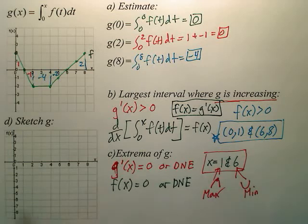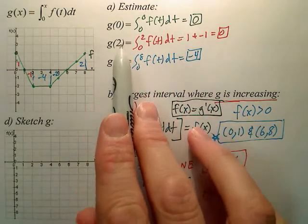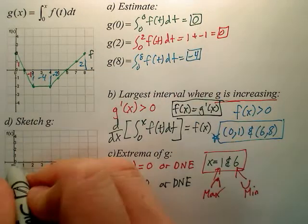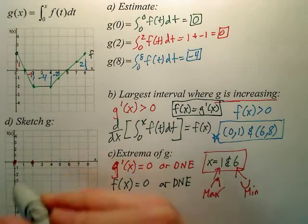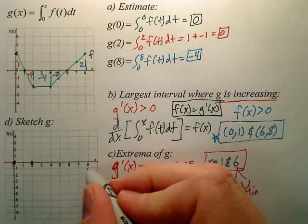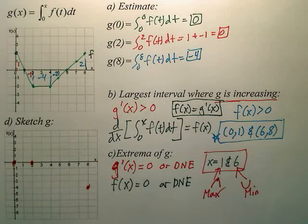Lastly, let's sketch it. To sketch this, well, we have some points. g of 0, g of 2, g of 8. If we're sketching g, let's just plot those points. So at 0, we're at 0. At 2, we're at 0. At 8, we're at negative 4. Now that doesn't help me too much. Let's find some more points.